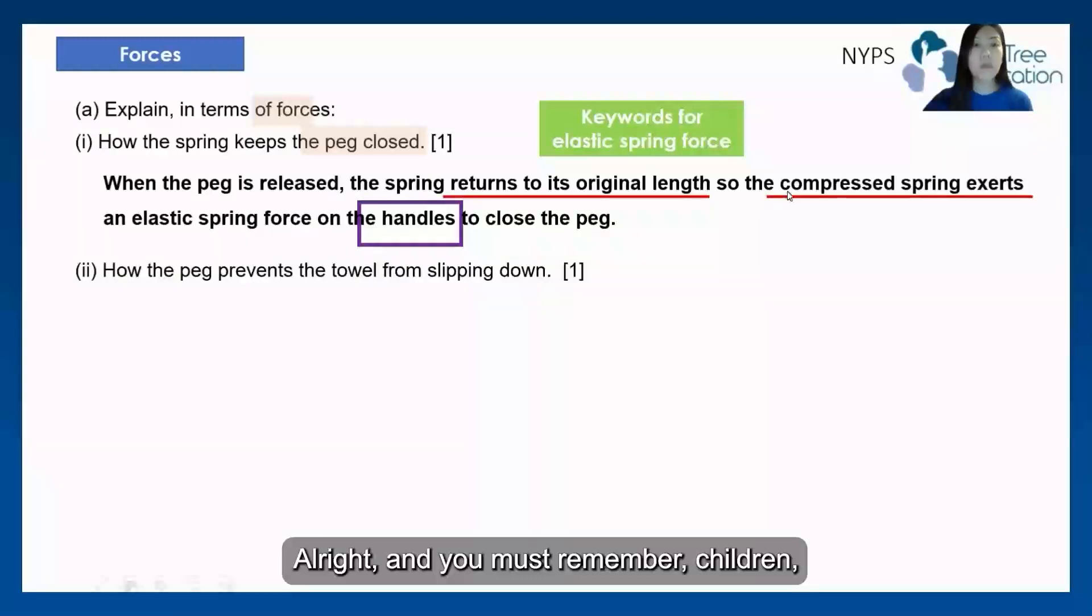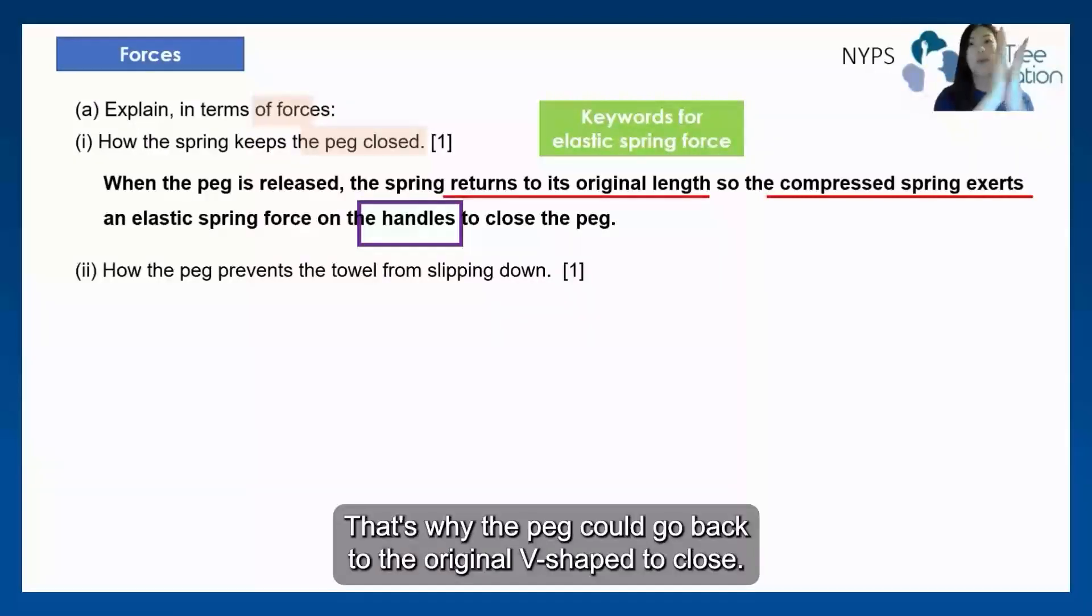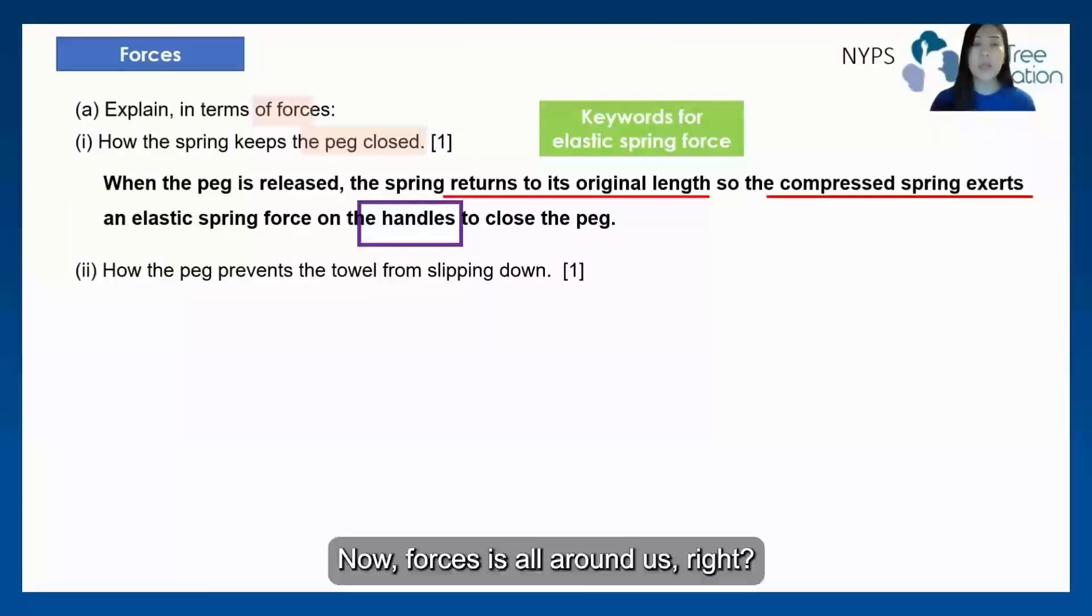And you must remember children that you must refer to the handles, because it is the handle that when it's released, that's why the peg could go back to the original V shape to close. So a lot of children actually forgot to write down on the handles.